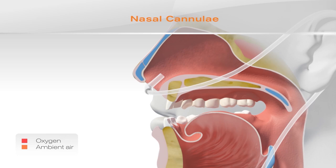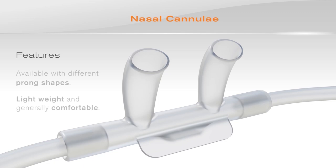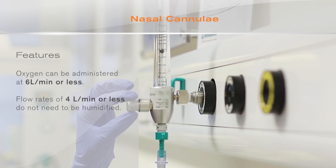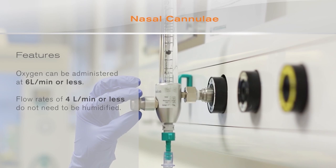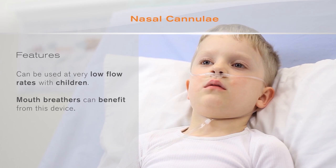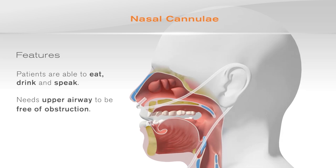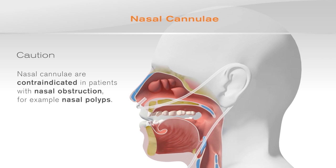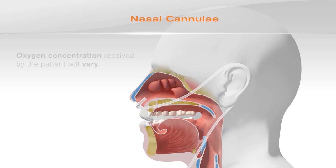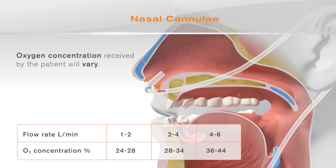Nasal cannulae are lightweight and generally comfortable. Oxygen can be administered at 6 litres per minute or less, and flow rates of 4 litres per minute or less do not need to be humidified. Nasal cannulae can also be used at very low flow rates with children, and mouth breathers can benefit from this device. Patients are able to eat, drink, and speak whilst receiving oxygen therapy. However, the use of nasal cannulae requires the upper airway to be free of obstruction and they are contraindicated in patients with nasal obstruction, for example nasal polyps. Oxygen flows of 1 to 6 litres per minute will deliver up to 44% oxygen to most adult patients.